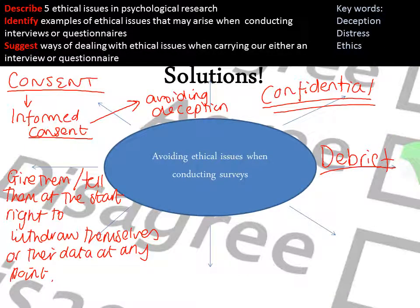When suggesting solutions for dealing with ethical issues in interviews or questionnaires, the easiest approach is to gain informed consent — telling participants truthfully what the research is about before they agree to take part, which also avoids deception. You should keep all data confidential, give participants the right to withdraw themselves or their data at any point, and debrief them at the end so they understand the true extent of the research. You might also provide contact details for any follow-up questions.